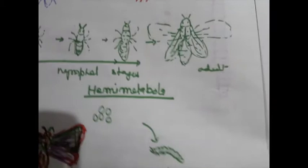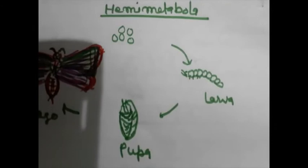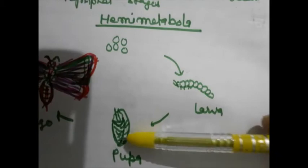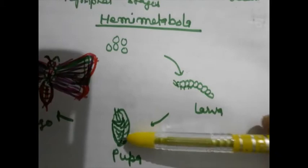In holometabolous insects, complete metamorphosis occurs during development. After hatching of egg, larva emerges and then it converts into pupa, and pupa converts into imago.